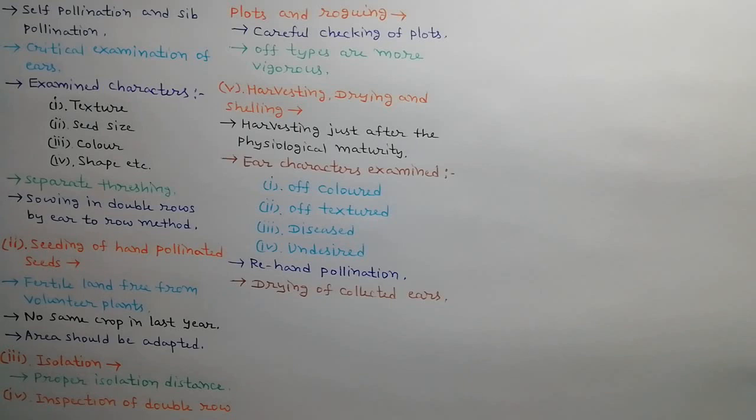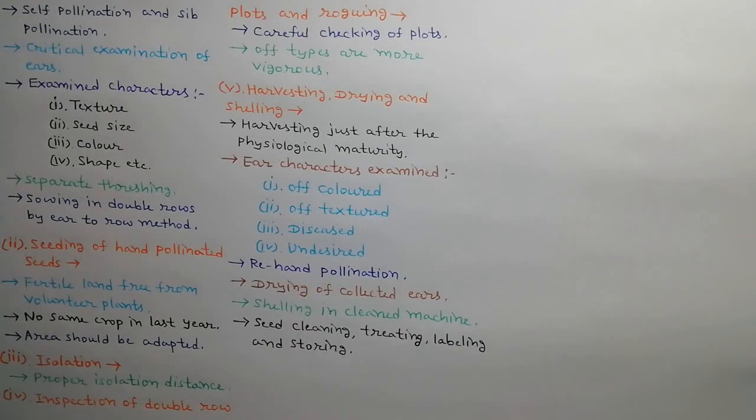After discarding undesired ears, remaining ears are collected and dried in clean dry bins where temperature must not exceed 43 degree centigrade. Shelling is done after drying. It should be done in cleaned machine to avoid physical mixture. Seeds are cleaned after shelling. Treat the seeds with fungicide and insecticide. Now label the seed and store in ideal storage conditions.